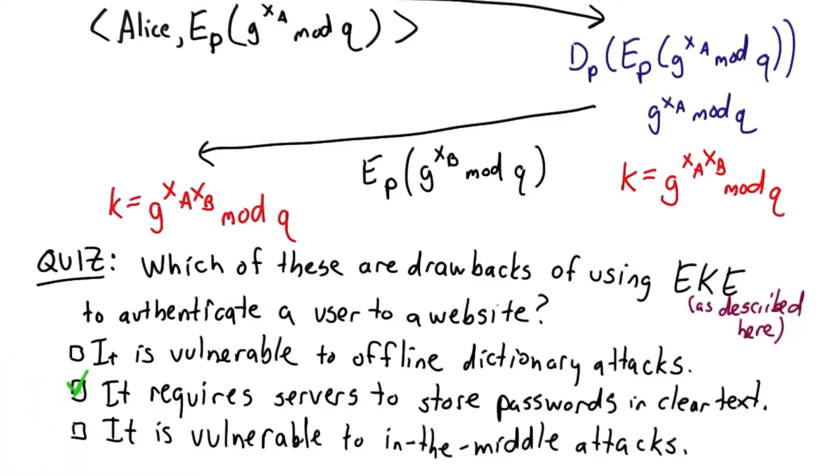The answer is only the second one is true. So the first answer is not true. In fact, the EK protocol is designed primarily with this goal of not being vulnerable to offline dictionary attacks.